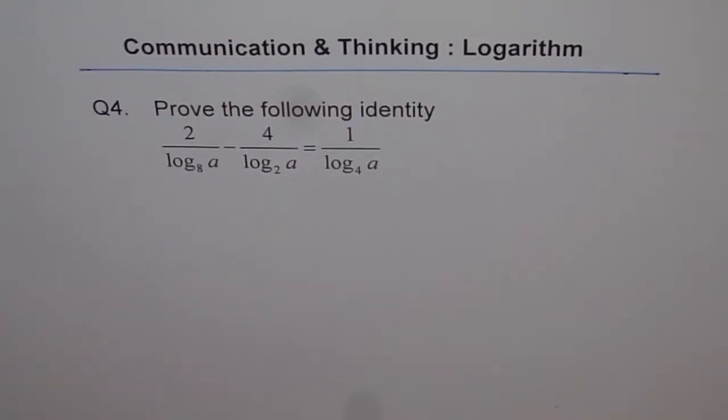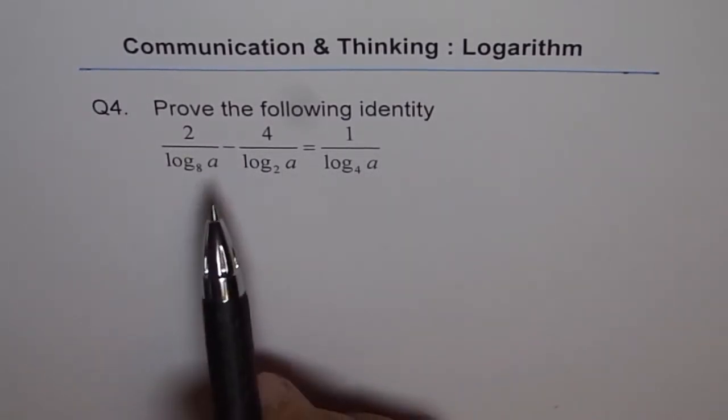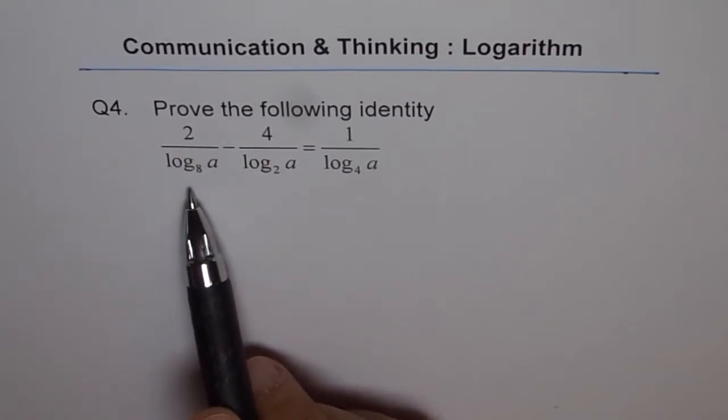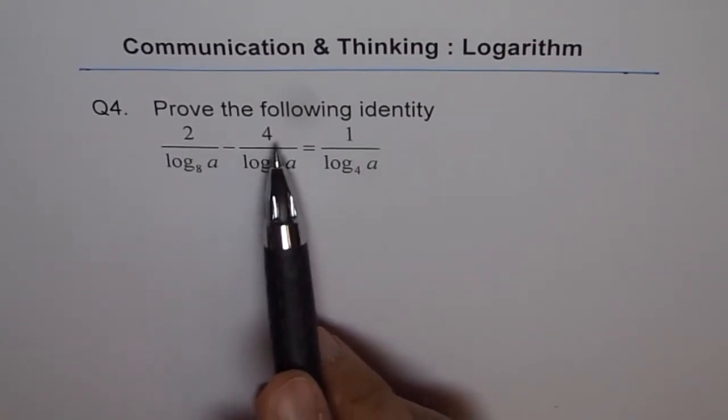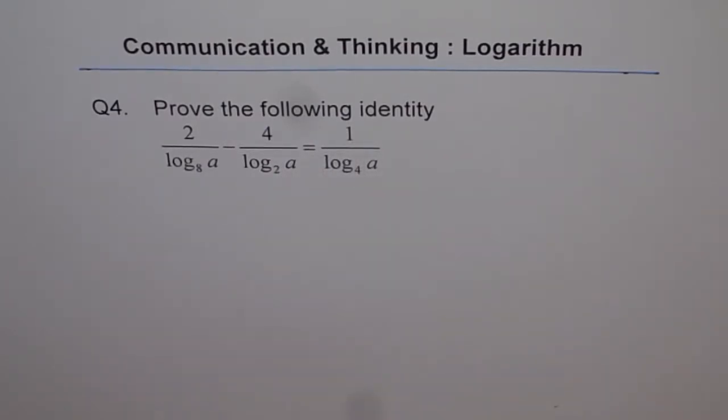Here is another interesting question. Question 4 on communication and thinking logarithms. Prove the following identity: 2 over log to the base 8 of A minus 4 over log 2 of A equals 1 over log 4 of A.